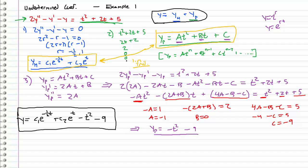Also, undetermined coefficients definitely does not work for every single non-homogeneous problem. In fact, it only works for a very small subset of right-hand side forcing functions — that's a direct consequence of the rule that says the number of forms of derivatives has to be finite. We will go over the most common cases where you will use undetermined coefficients. Otherwise, you will have to use something called variation of parameters, which we will touch on after we are done with undetermined coefficients.